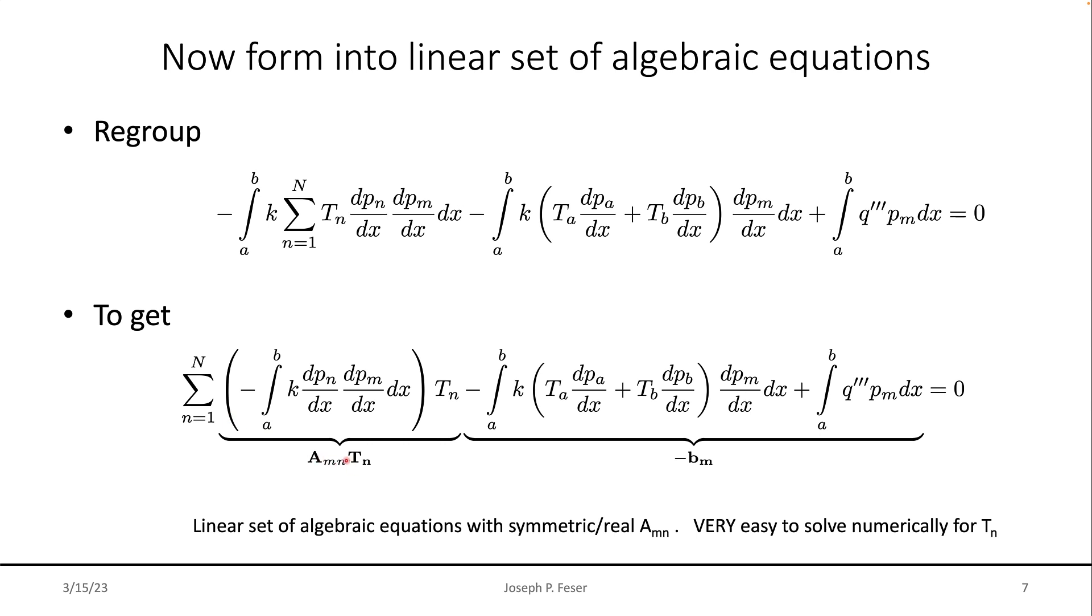And then what I need to do is I need to add that over all values of n. Guess what? That is the definition of matrix vector multiplication. I have a summation over n of a number that depends on m and n times a number T sub n summed over all of that. That is the definition of a matrix vector multiplication.